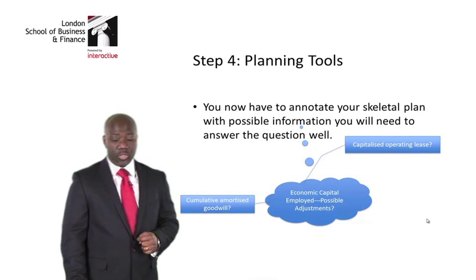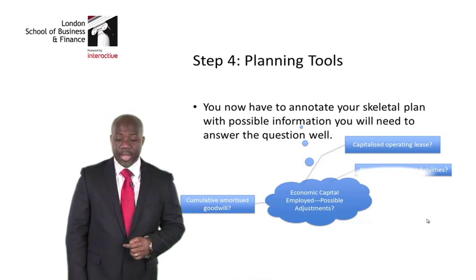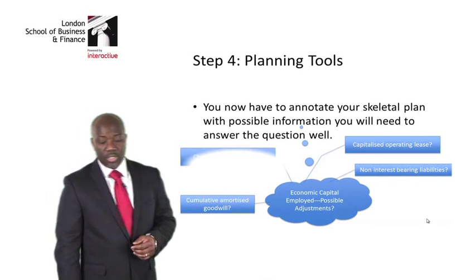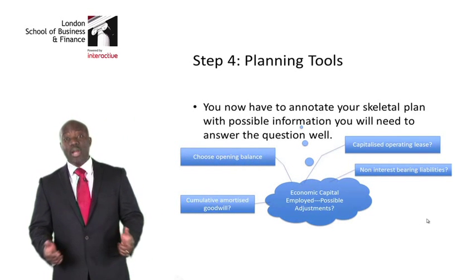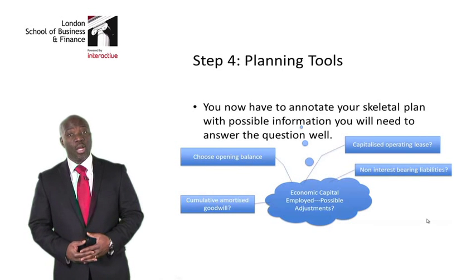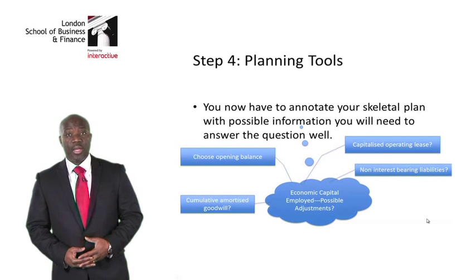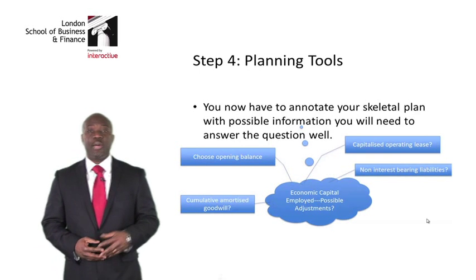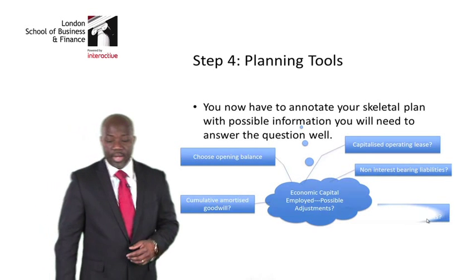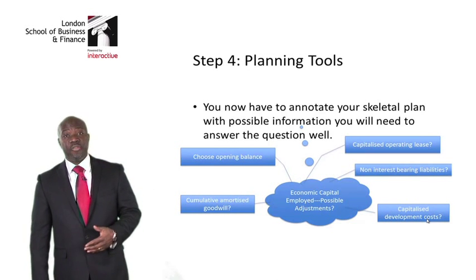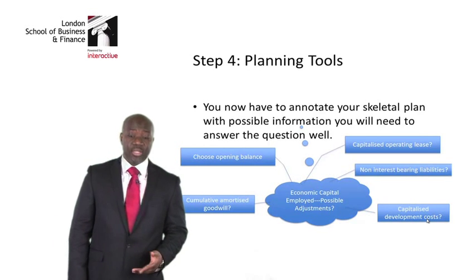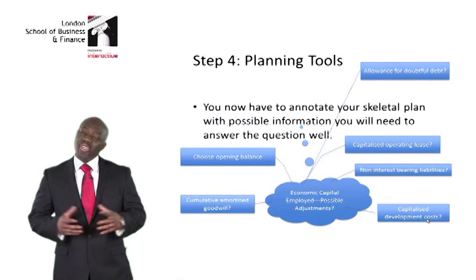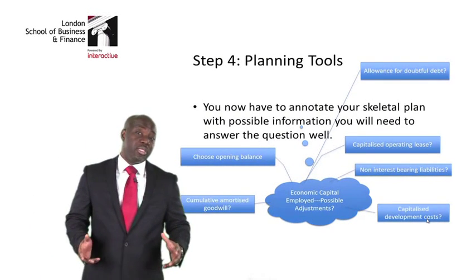If there is any cumulative amortized goodwill, I need to deal with that. I also need to think about non-interest bearing liabilities. I need to decide whether to use the opening or closing capital employed — remember, we always start with the opening balance, as the examiner will often try to trick you. I also need to consider any development costs not yet capitalized and any allowance for bad debts that has been taken out.